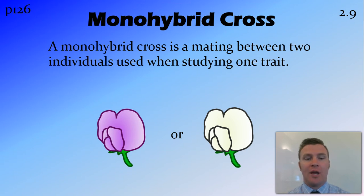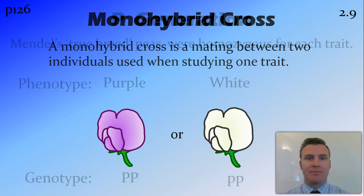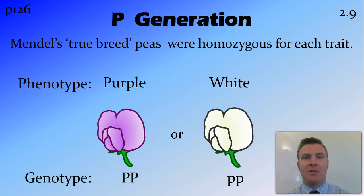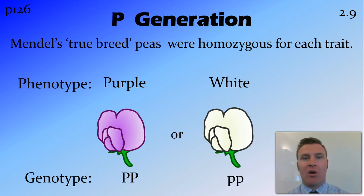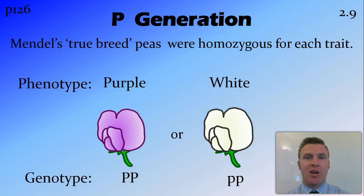What we're going to look at is these two individuals — a purple flower and a white flower. We know that one of the things Mendel did, which made his experiment so good, is that he got true-bred peas, breeding them for two years prior to his experiments so that they were homozygous for each trait. So our purple flower, being the phenotype purple, has a genotype PP — capital because it is dominant. And our white flower has genotype pp, lowercase to show that it is recessive.